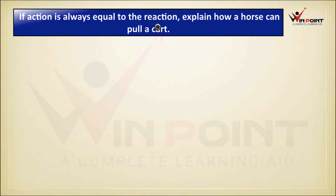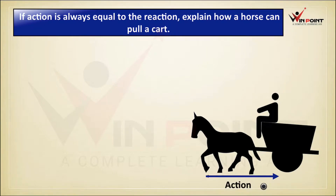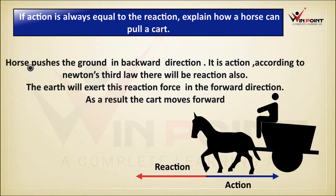If action is always equal to reaction, how can a horse pull a cart? The horse exerts an action force on the surface of the earth in the backward direction. According to Newton's third law, the earth exerts a reaction force on the horse in the forward direction. As a result, the horse and cart move forward.